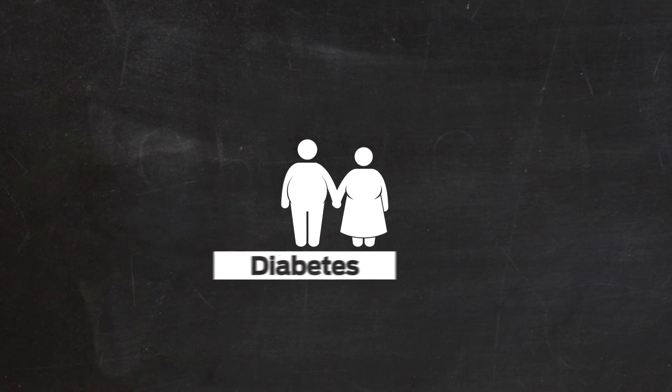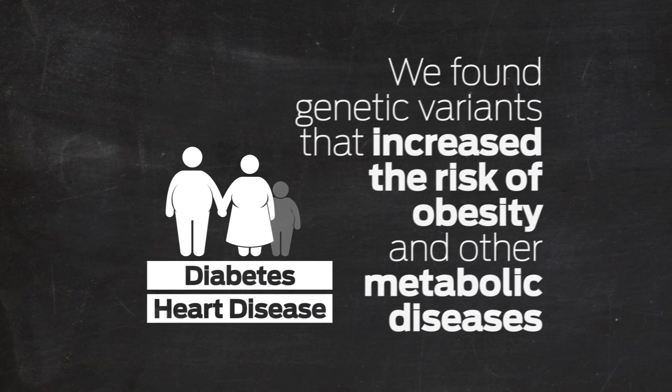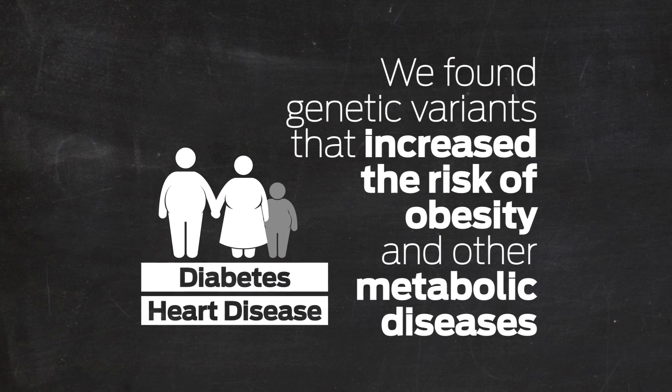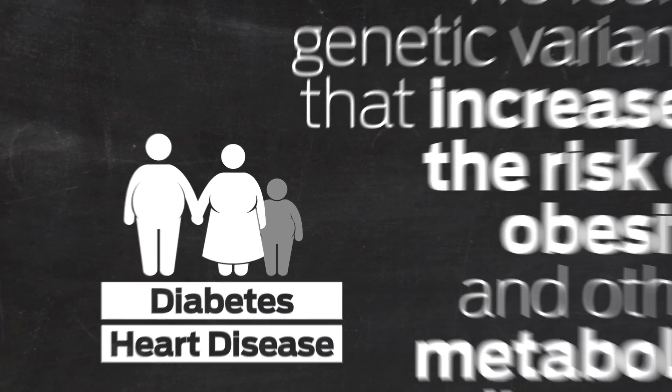When people do develop these diseases, some develop different sets of them — some people are obese and have diabetes, some are obese and get heart disease. But now we are starting to find genetic variants that predispose people not only to obesity but to some of these other metabolic diseases. That's starting to get us to a better understanding of how this causes disease — defining the variants and genes that underlie a predisposition to metabolic disease in general.